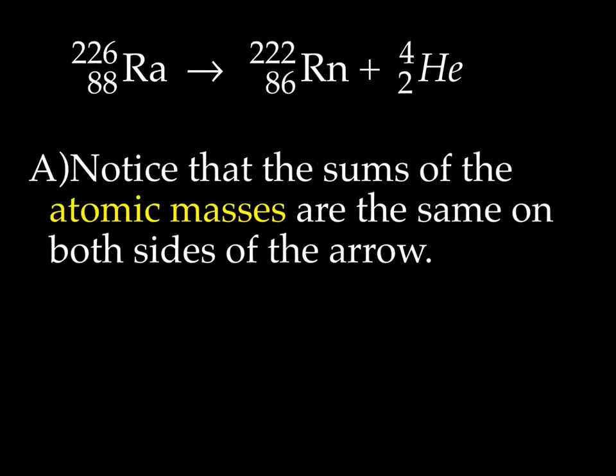All right. So first thing I'd like you to take note of is that the sums of the atomic masses are the same on both sides of the arrow. So we have 226. Think of the arrow as like an equal sign. 222 plus 4. So 226 equals 222 plus 4. The sum of the masses are the same on both sides of the arrow.